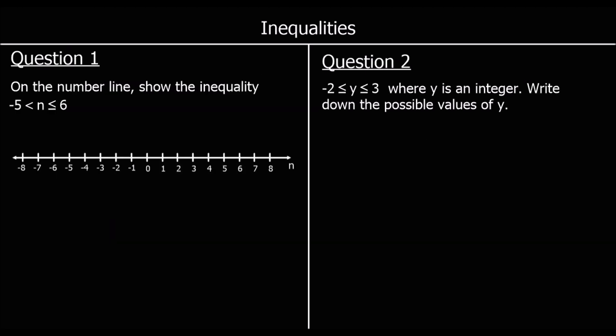Two questions to finish up. Question 1: on the number line, show the inequality — n is bigger than negative 5 and less than or equal to 6. So in between negative 5 and 6: it can equal 6, so we colour that in; it can't equal negative 5, so we don't colour it in. We join them up with a line, and that is the answer.